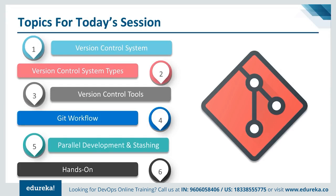First, let's look into all the topics we're going to cover in today's session. We'll start by understanding why we need version control, then get into what exactly version control is. After that, I'll cover the different types of version control systems and the tools. Then I'll tell you why Git wins over other tools in the market, and what exactly Git is with its workflow. Finally, we'll move on to the hands-on part where I'll be running all the Git commands and you'll know different operations related to Git.